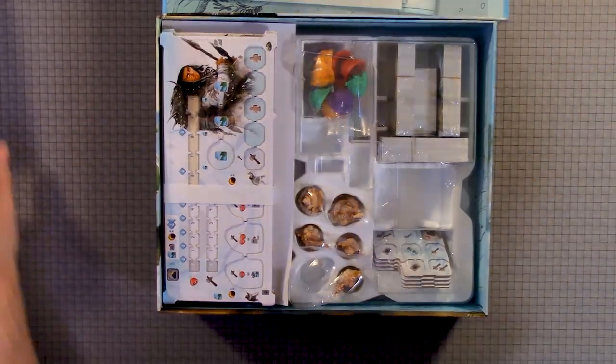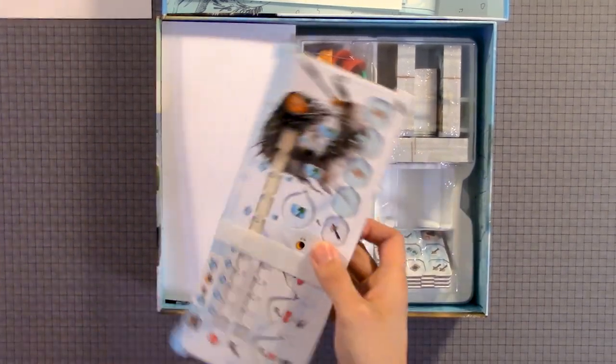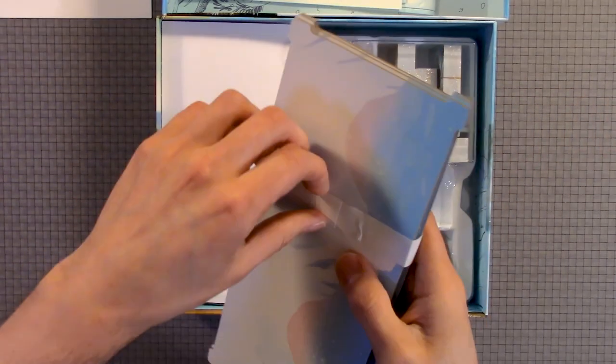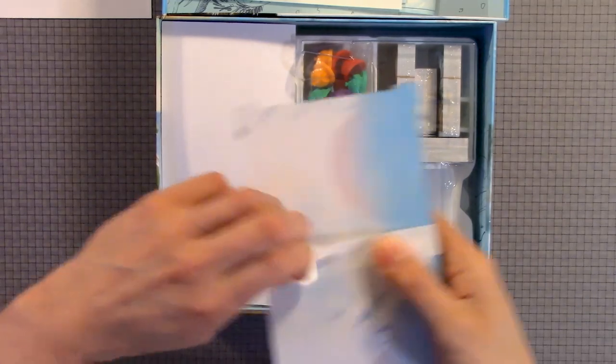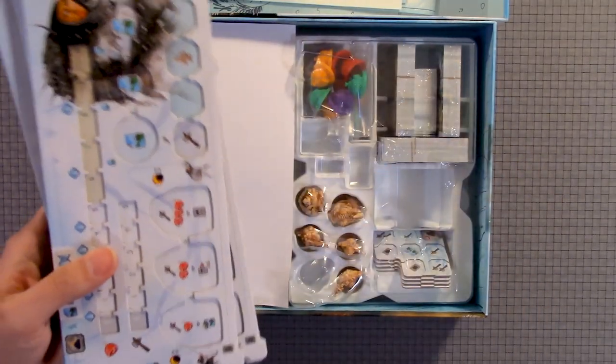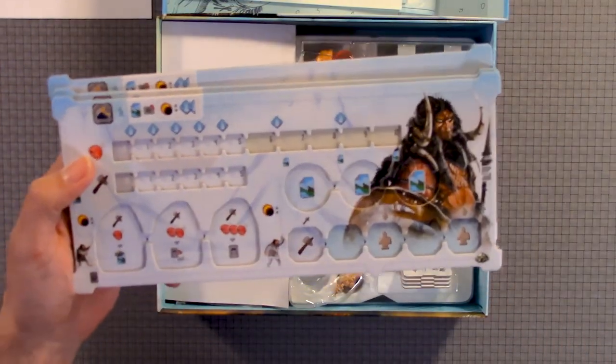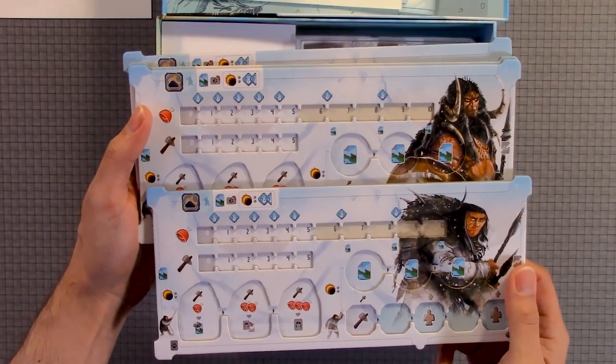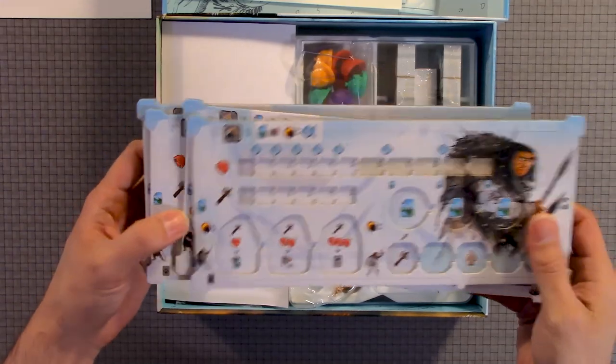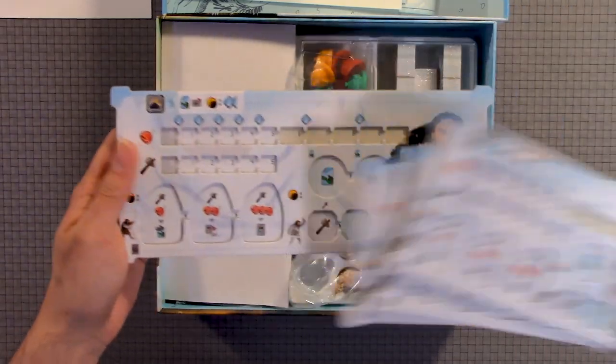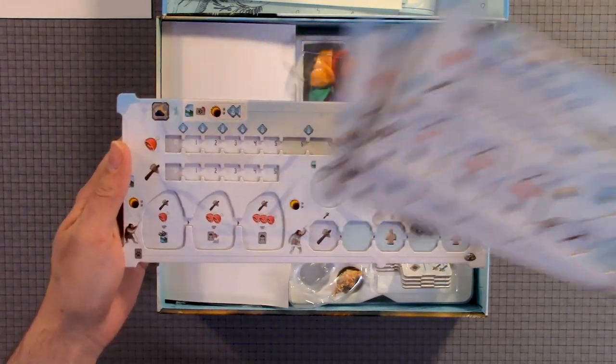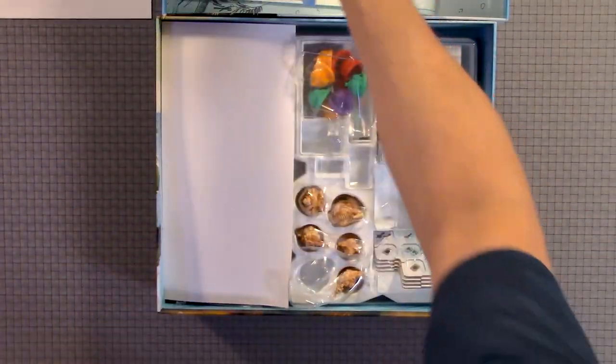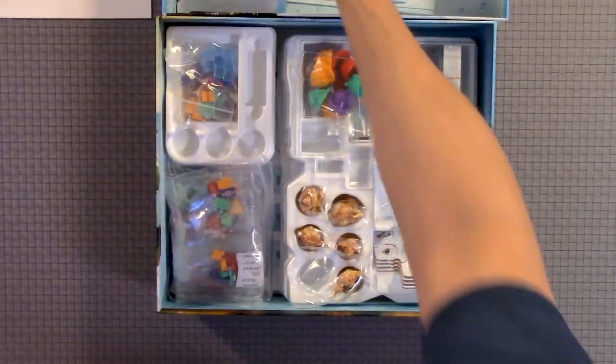Here we have the player boards. They all look pretty much the same. There is no variable power for each individual tribe that I can see. Quite a bit of components. I really like the inserts.